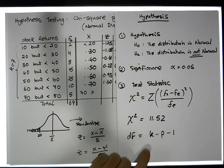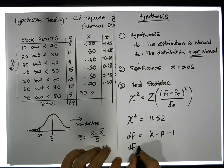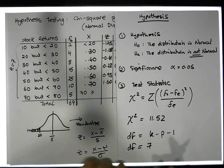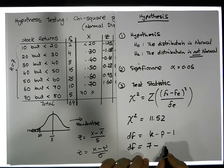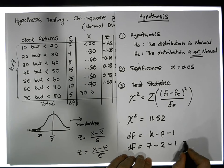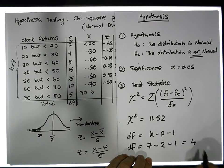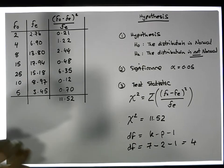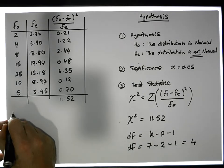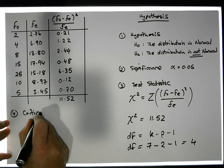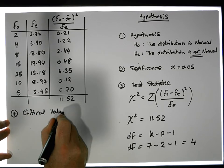In our case, degrees of freedom equals 7 (because there were 7 levels), minus 2 estimated parameters (the mean and standard deviation), minus 1, which gives us 4 degrees of freedom. So we have all of our test statistic stuff done. Now we need to calculate Step 4: our critical values.